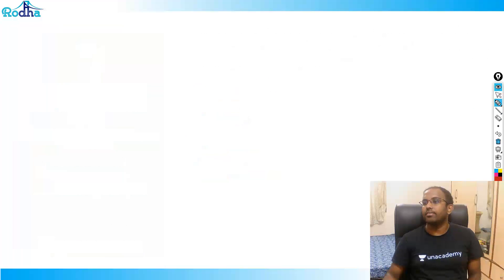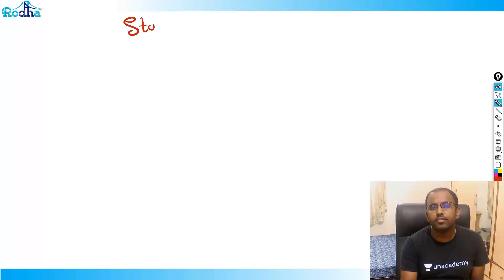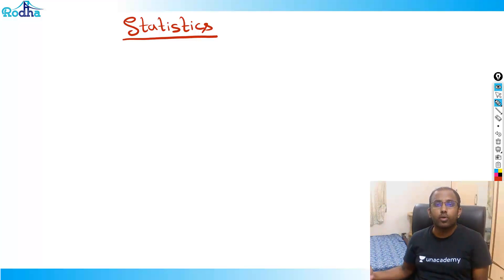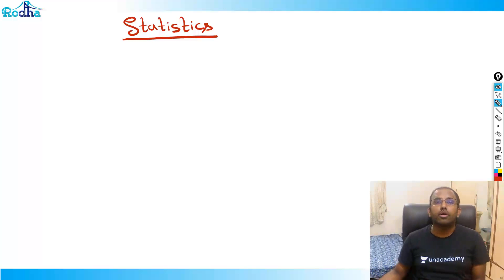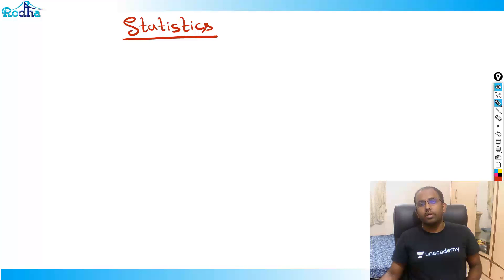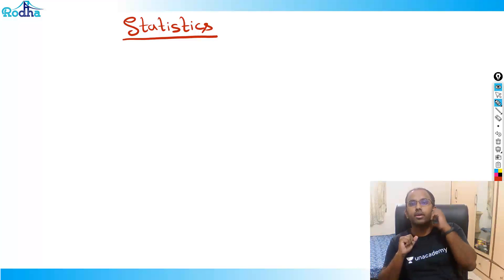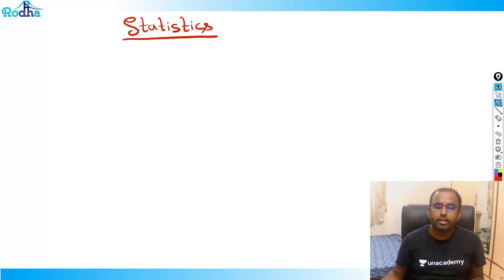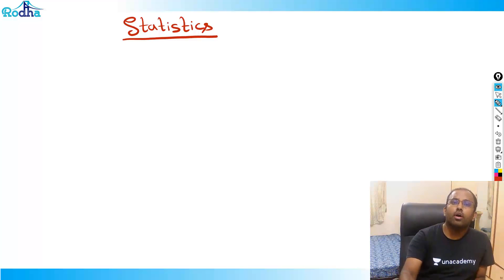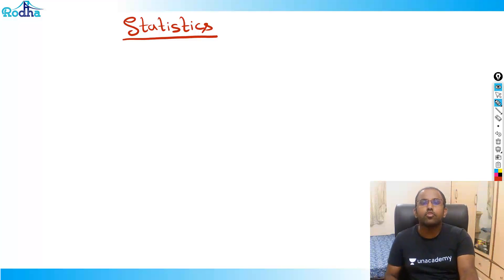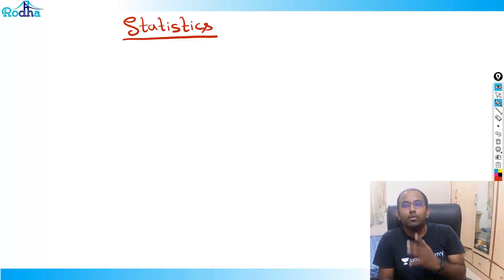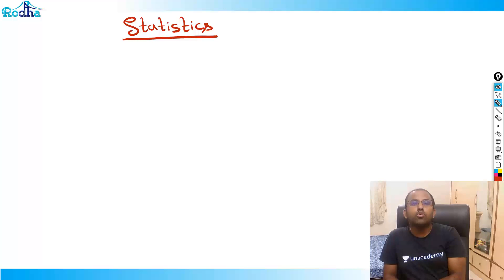Now let's start CAT and XAT. Statistics is a topic which is quite important for CAT and XAT. They'll ask questions on statistics, and we have seen sets on mocks and previously in CAT 2014 there was a bit of mean, median, mode. So basically, the questions which we have got till now are arithmetic mean, geometric mean — quite normal. Mean, median, mode are the measures of central tendency, and central dispersion — this is what you need to study for CAT and XAT.